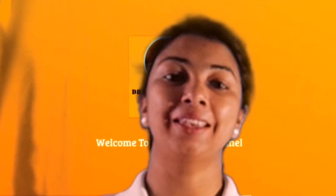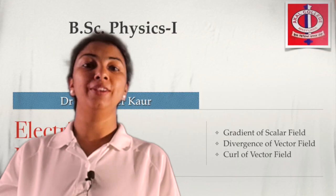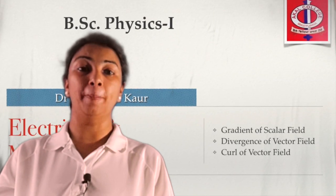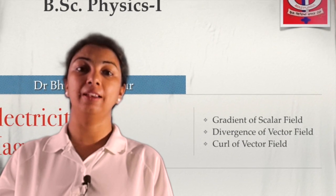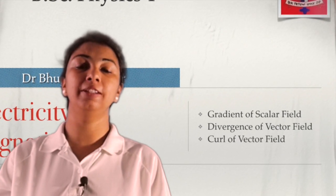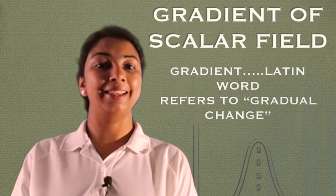Welcome to the second part of electricity and magnetism. In this video we cover three topics: first is gradient of a scalar field, second is divergence of vector field, third is curl of vector field.